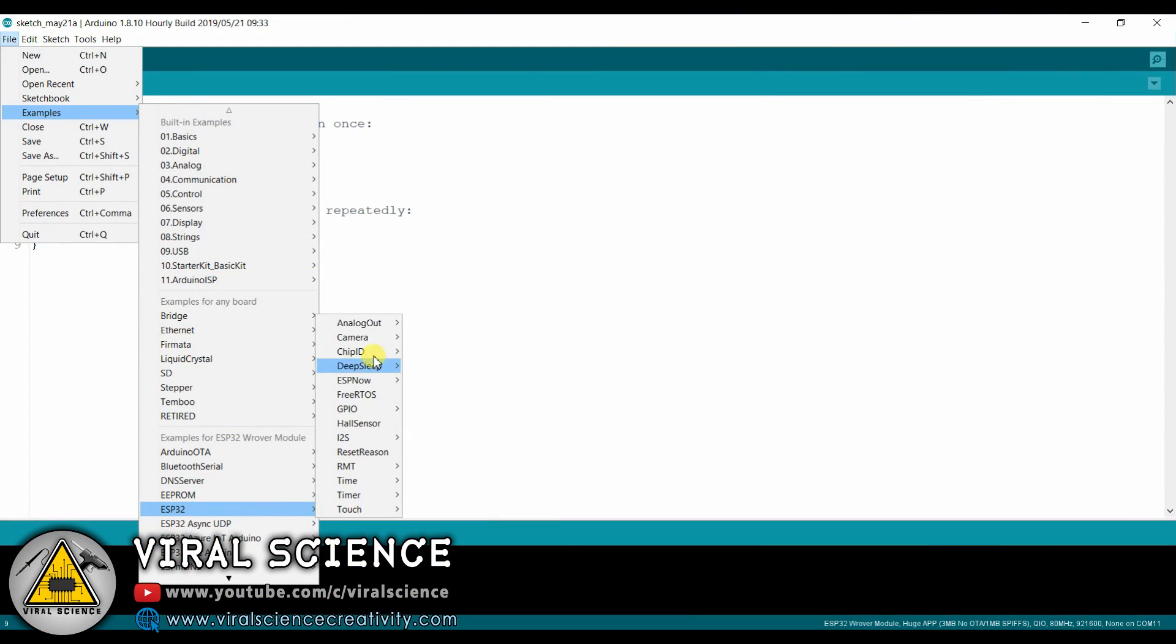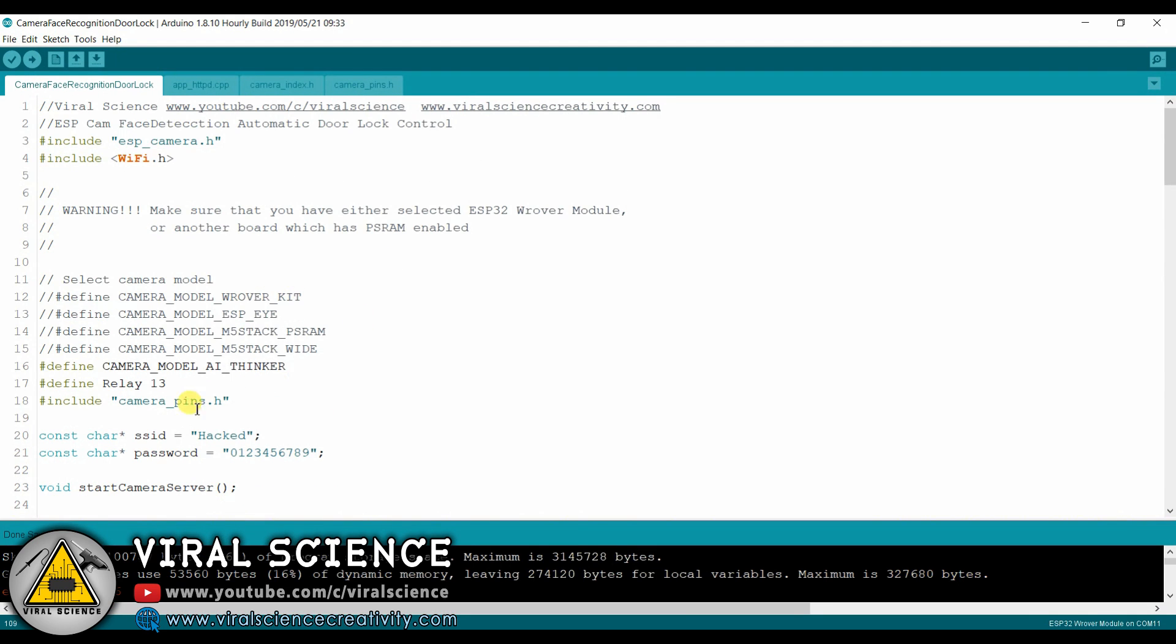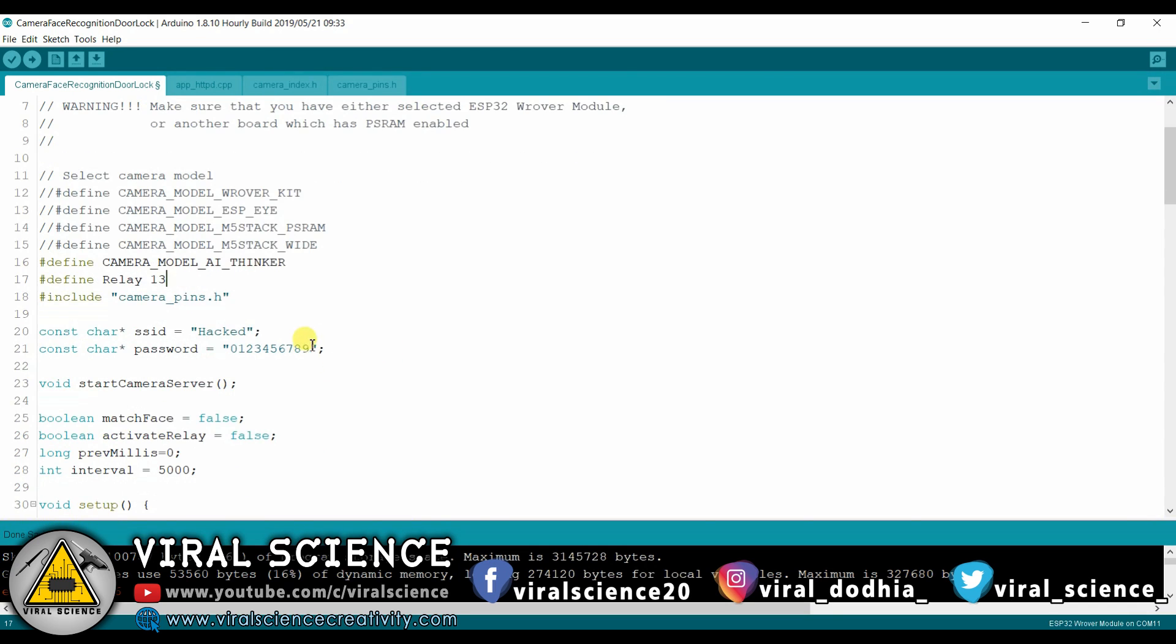I have used camera web server example and modified it for our project. To download this code you can find a link in the description down below. Now we will select our board and rest of other boards we will comment it. Now we will enter our wifi name that is wifi SSID and wifi password.